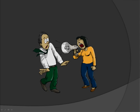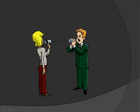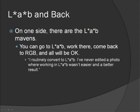There's some equally fierce partisanship warning about the perils of manipulating photographs in LAB mode. They'll leave you with the impression that your photograph is in danger of serious degradation from a round trip to LAB and back. I'm going to spend a couple of video episodes exploring the trade-offs to manipulating color photographs in LAB. In this episode, we'll look at what happens when we make a round trip to LAB. On one side, there are the LAB mavens — you can go to LAB, work there, come back to RGB, and all will be okay. The kind of comment you'll hear is: 'I routinely convert to LAB. I've never edited a photo where working in LAB wasn't easier and a better result.'